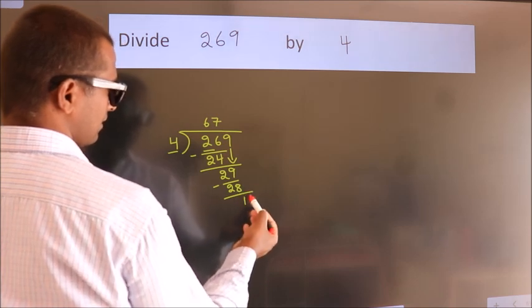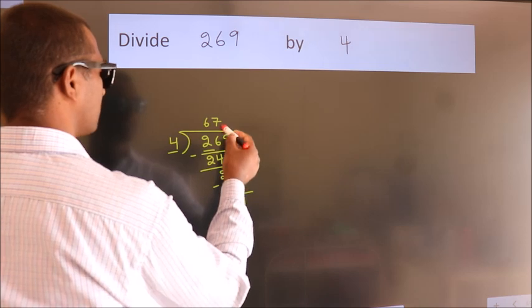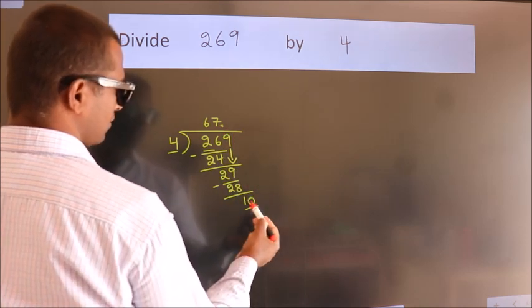After this, there are no more numbers to bring down. So what we do is put a decimal point and take 0, giving us 10.